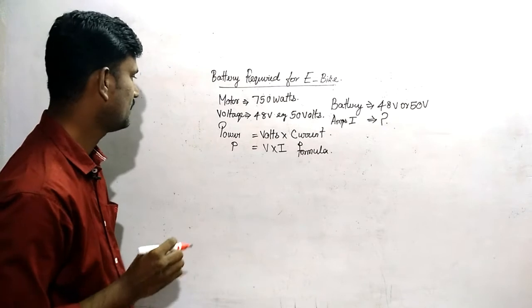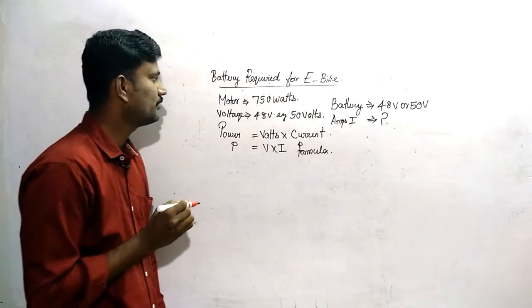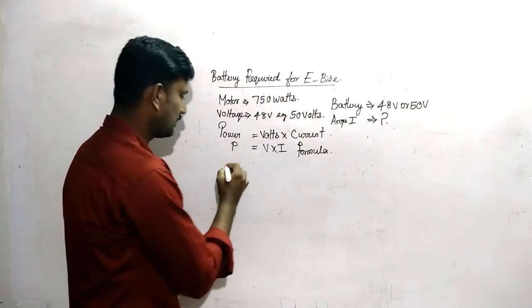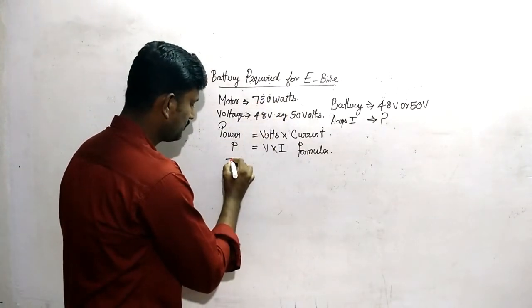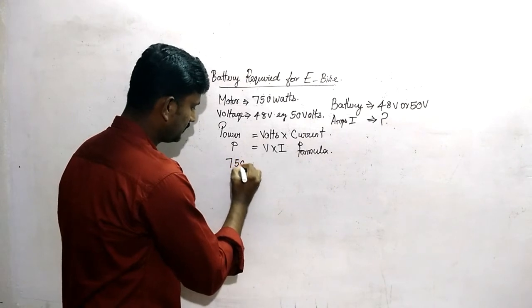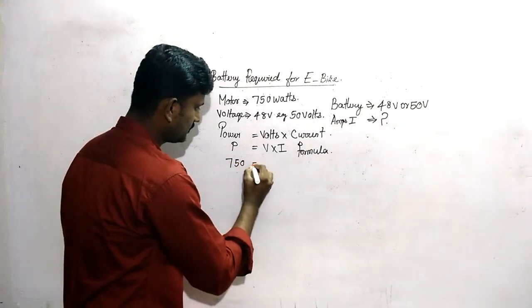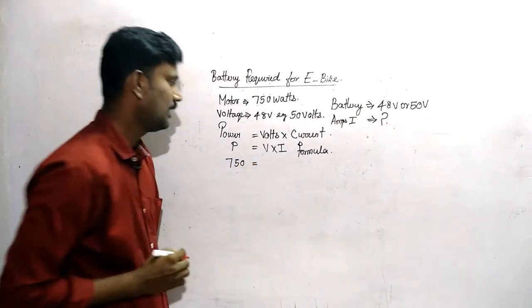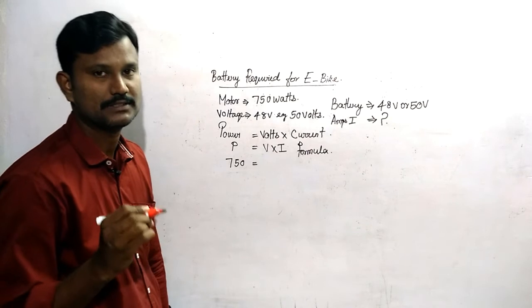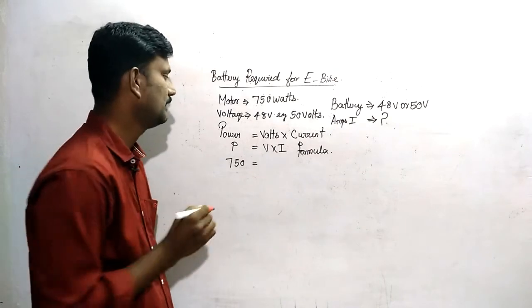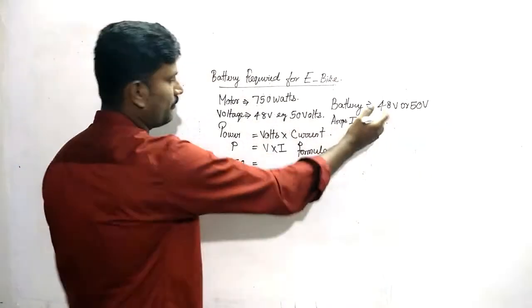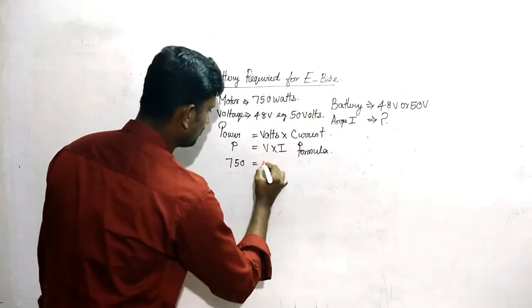We can see the power of the battery. 750 watts, volts 60 — or 50 volts.